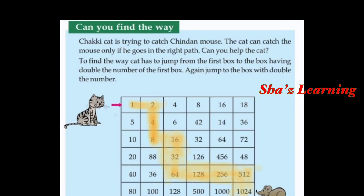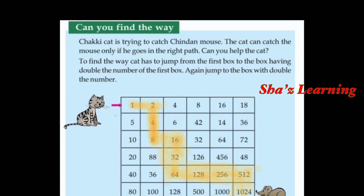Here we have a problem. Can you find the way? Chucky cat is trying to catch Chindle mouse. The cat can catch the mouse only if he goes in the right path. To find the way, cat has to jump from the first box to the box having doubled the number of the first box.